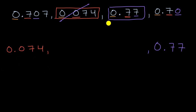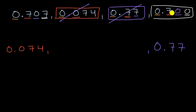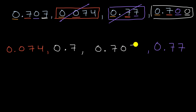We've used that number, so now we have to compare the remaining two numbers, which were equal in the ones, tenths, and hundredths place. So we go to the thousandths place. The first of these has seven thousandths, and the other has zero thousandths. So the one with zero thousandths is smaller — that's 0.7. And the next to largest is 0.707.